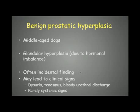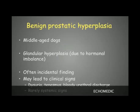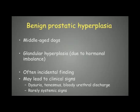The prostate can have benign prostatic hyperplasia, seen commonly in middle-aged dogs. It is generally due to glandular hyperplasia secondary to hormonal imbalance and is often an incidental finding. Sometimes it can lead to clinical signs like dysuria, tenesmus, or bloody urethral discharge, but rarely will the dog have systemic signs.